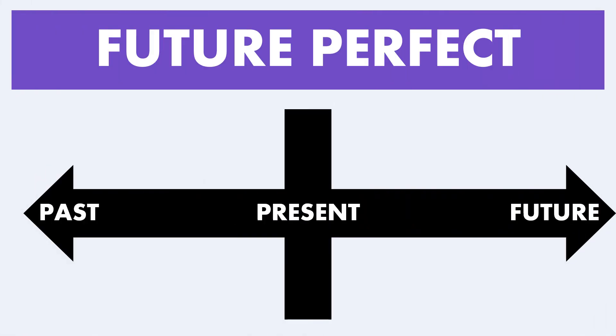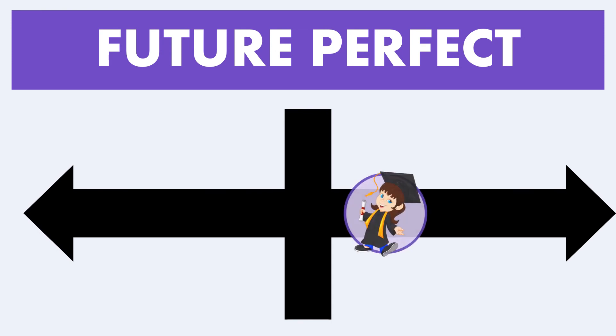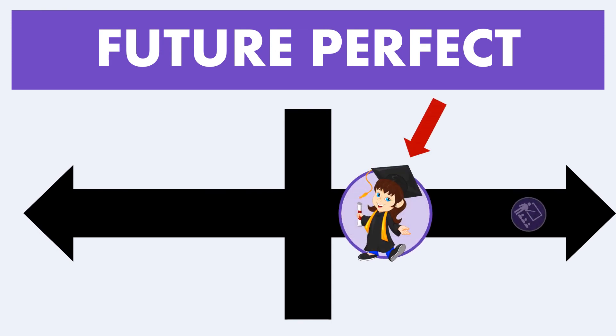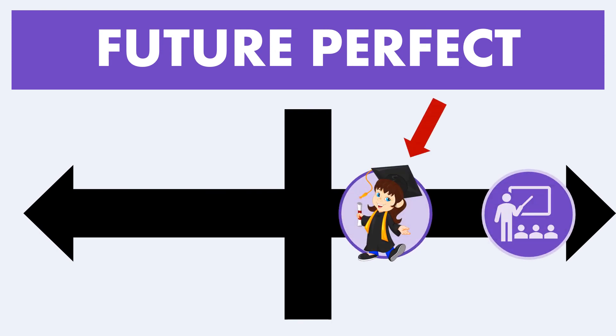Let's see how this is represented on our visual timeline. We have the past, present, and future. The future event — you learning something — is shown before another future event, which is the end of this presentation.